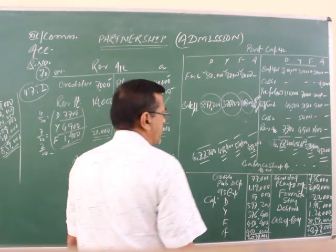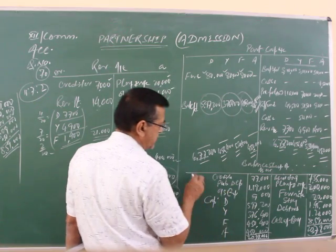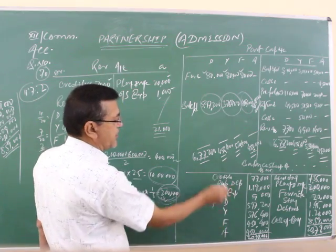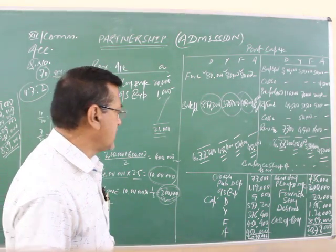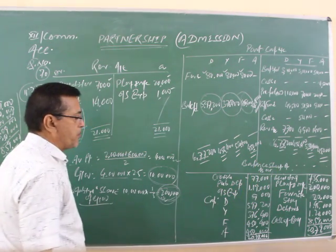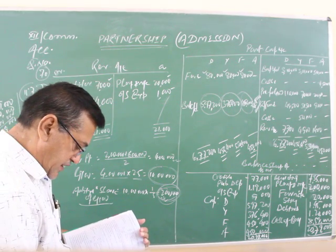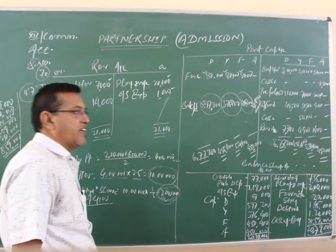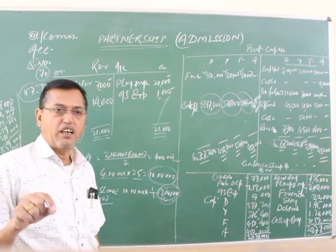Later we have to prepare the balance sheet. On the liability side, creditors 70,000 given and 7,000 unrecorded creditors to be considered, so now this is 77,000. Outstanding expenses, it is brought down to 9,000.